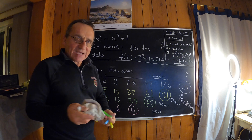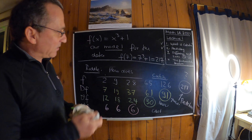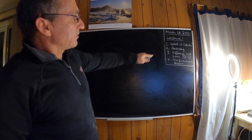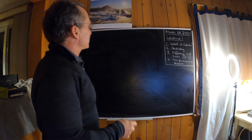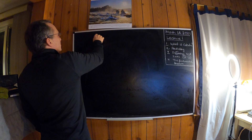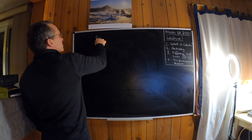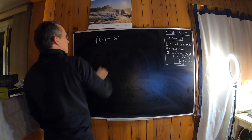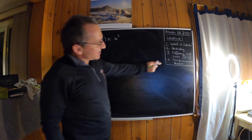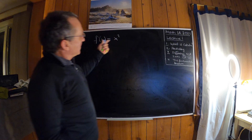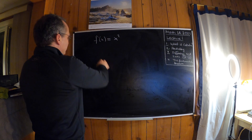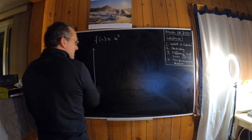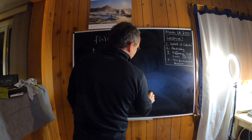We can already understand this on a discrete level. Let's look at differences and sums of a function. Let's take f(x) = x². This data can also be plotted, and that's an important visualization tool. We take x here and f(x) here, and look at what happens at 1, 2, 3, 4, 5.